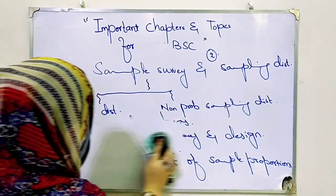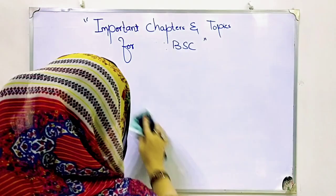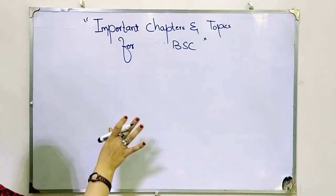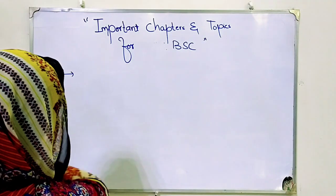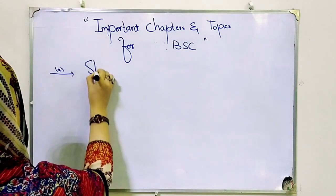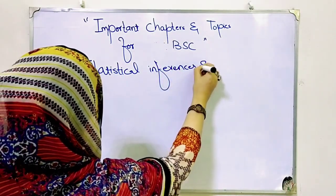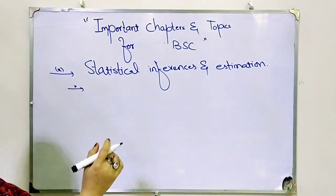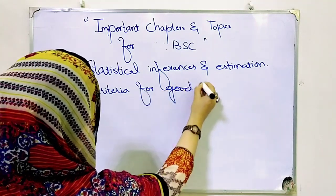The second chapter is also important — Statistical Inferences and Estimation. This chapter you have to prepare well. There is theory I think is very important and comes in exams: Criteria for Good Point Estimator. If you prepare these chapters, you can take 80–90% marks.